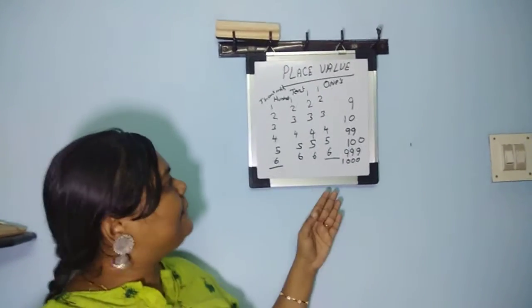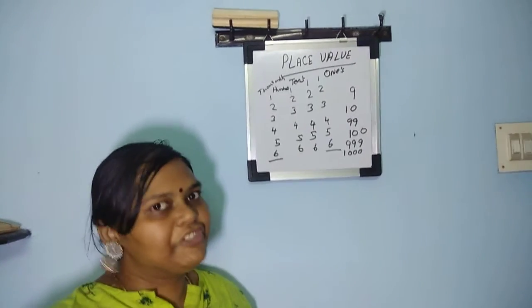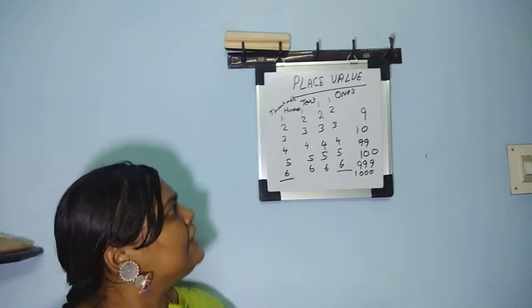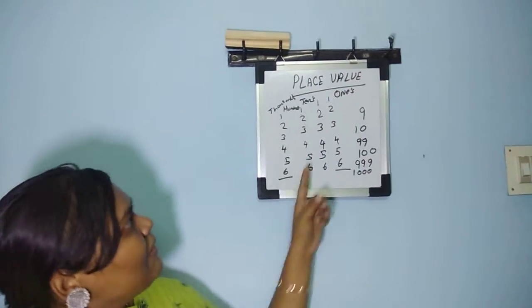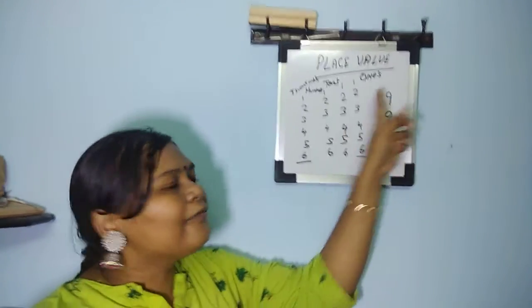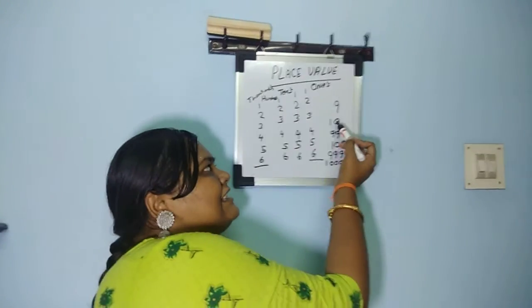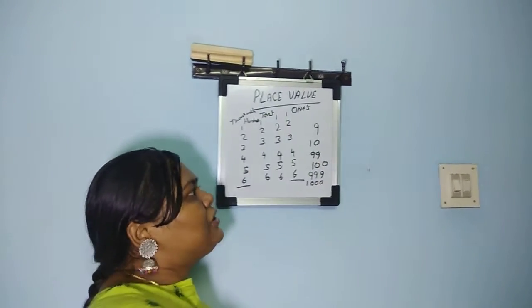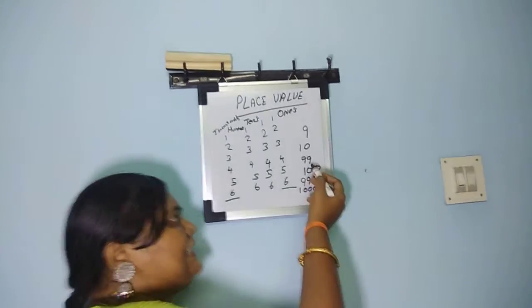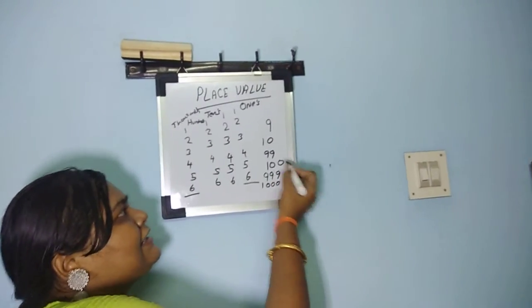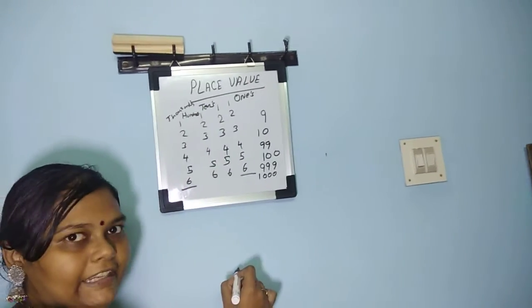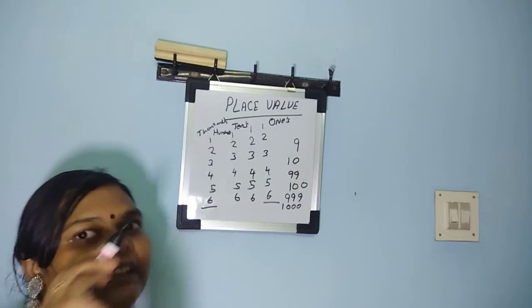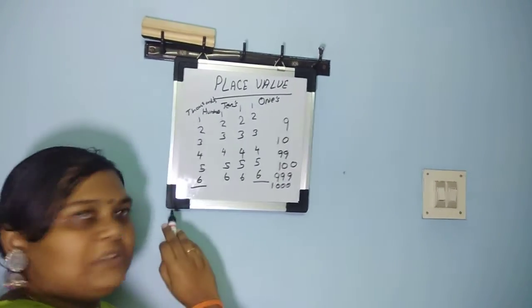I think the kids will be able to understand in this way of teaching. Because when it is once, the one number, it is the first number once. So when it is tens, when the one digit completes and the second digit, 2 digit number starting is 10, so it is tens. So when the 2 digit number ends, the 100 is the 3 digit number starting number, so it is called as hundreds. When the 3 digit ends and 1000 is the 4 digit starting number, so it is called as thousands.